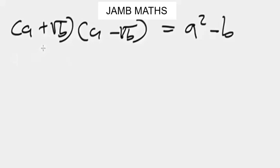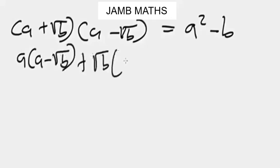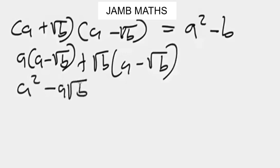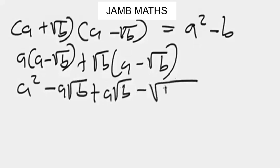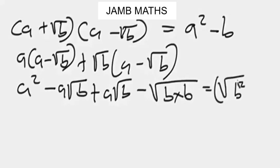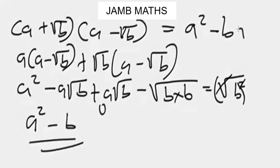Let me show you how, using the same technique for multiplying algebraic expressions with double brackets. Expanding: a times a minus square root of b, plus square root of b times a minus square root of b. This gives us a squared minus a square root of b plus a square root of b minus square root of b times square root of b. The minus a square root of b and plus a square root of b cancel to zero — just like minus one plus one equals zero — and we are left with a squared minus b.